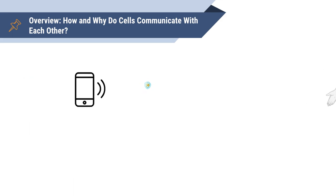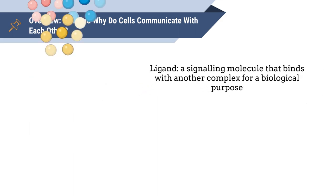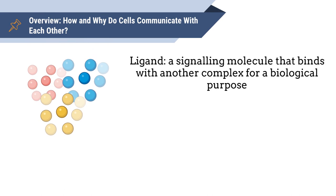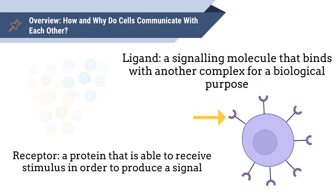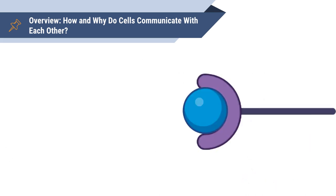A ligand is a signaling molecule that binds with another complex for a biological purpose. A receptor is a protein that is able to receive a stimulus in order to produce a signal. Often this signal is a ligand that binds specifically to a certain receptor.